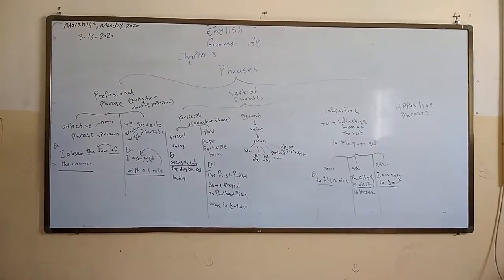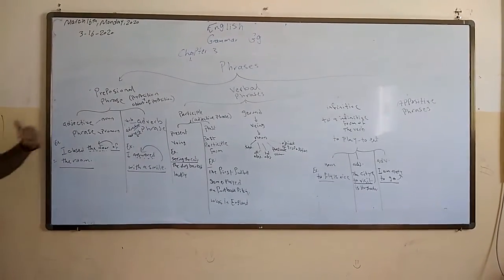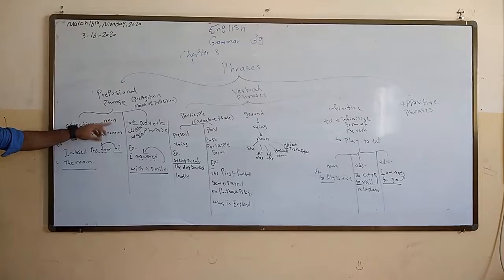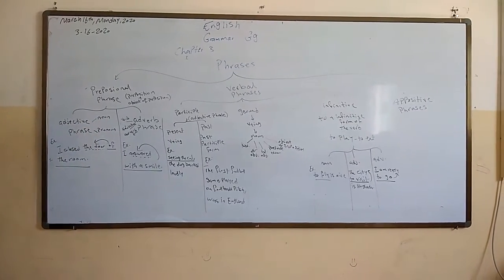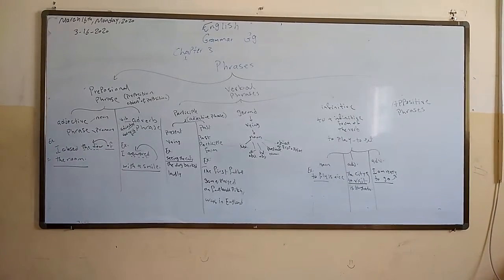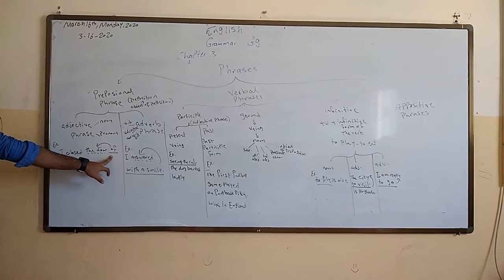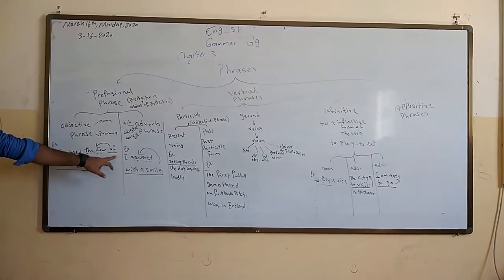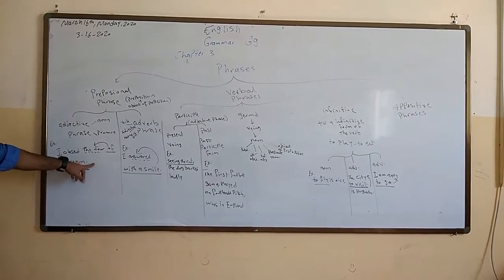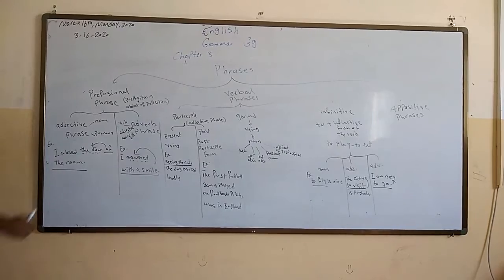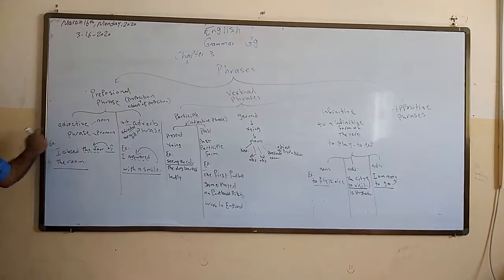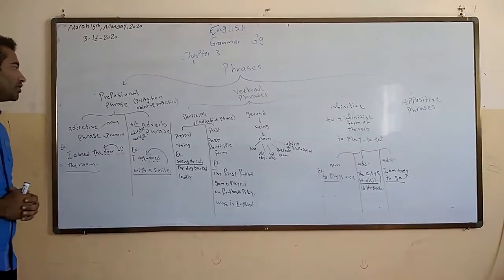We know that the adjective phrase generally modifies or describes a noun or pronoun. So the adjective phrase will modify or describe a noun or pronoun. The adjective phrase is a prepositional phrase. For example, 'I called the door of the room.' Here, 'of' is the preposition and 'the room' is the object of preposition. So 'of the room' is the prepositional phrase, and its function is to modify the noun 'door' — so it's an adjective phrase.